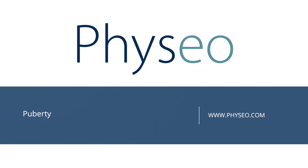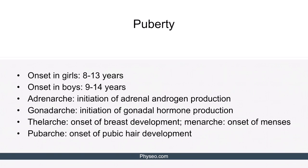Welcome to our video on puberty. Puberty in girls starts anywhere from 8 to 13 years of age, while in boys it occurs from 9 to 14 years of age.